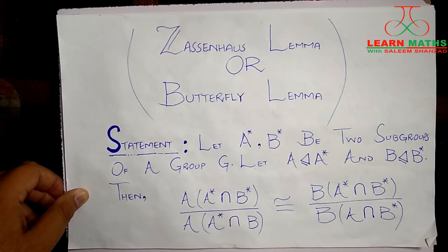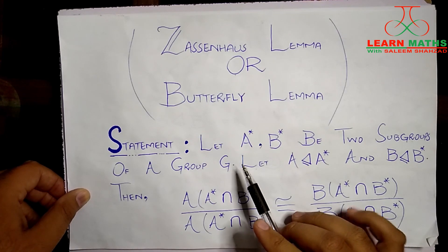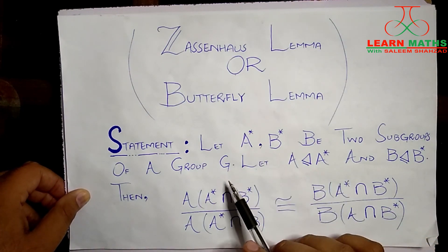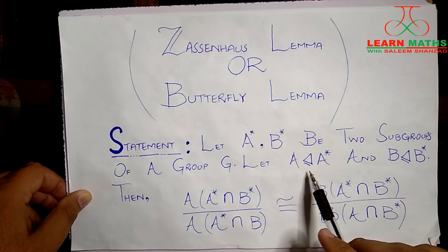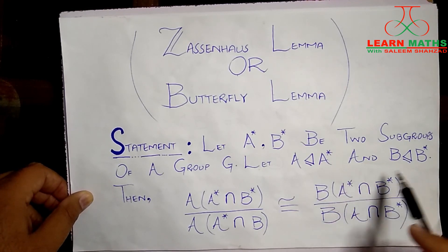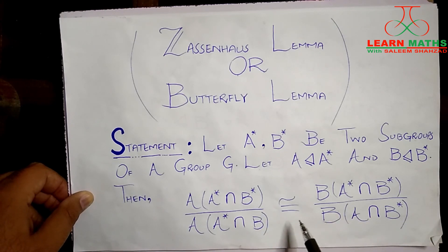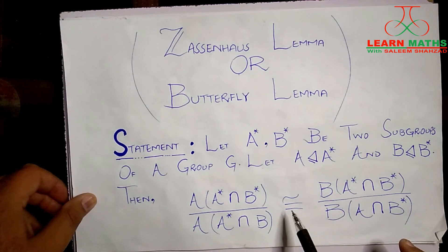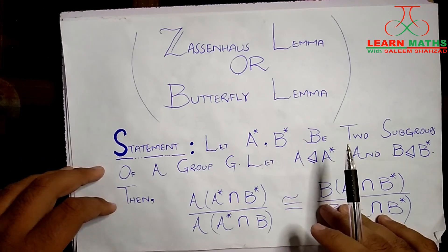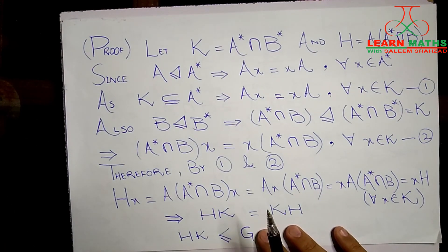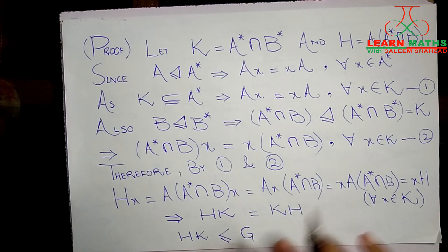The statement is: let A* and B* be two subgroups of a group G, let A be a normal subgroup of A*, and B be a normal subgroup of B*. The claim is that these two quotient groups will be isomorphic. Let's start the proof.